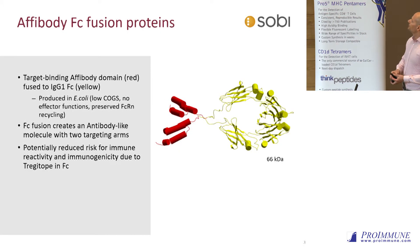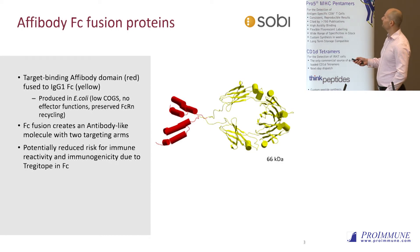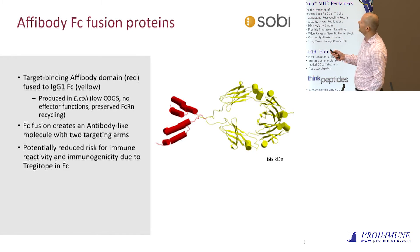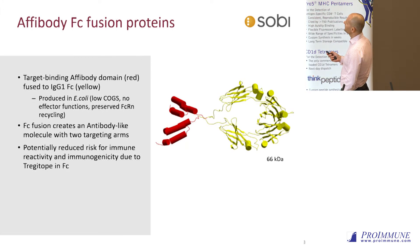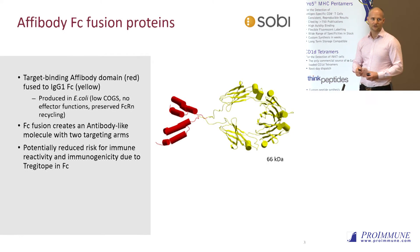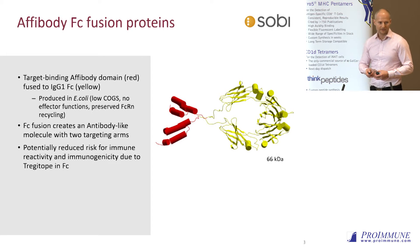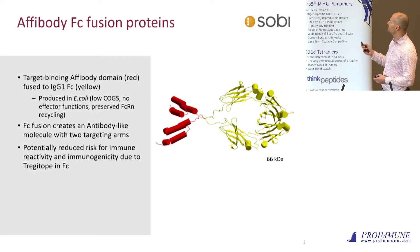For Affibody FC fusion proteins, we basically fuse the FC domain of human IgG1 to Affibodies. These are also produced in E. coli, which gives low COGS. We have preserved FCRN recycling functions but no effector functions because the molecules are deglycosylated. We have two arms, like an antibody, giving higher avidity and a potentially reduced risk for immune reactivity due to published T-regitopes in the human IgG1 FC.